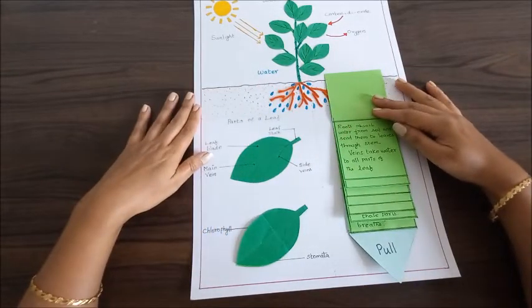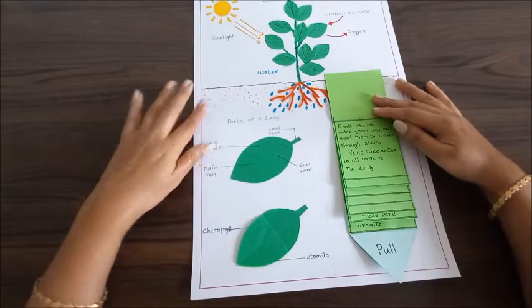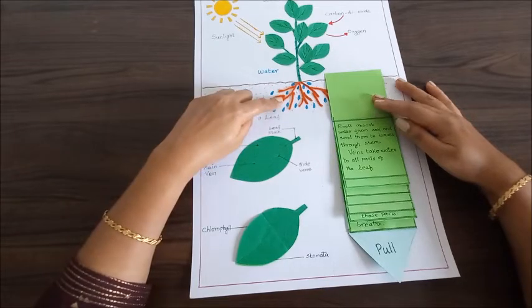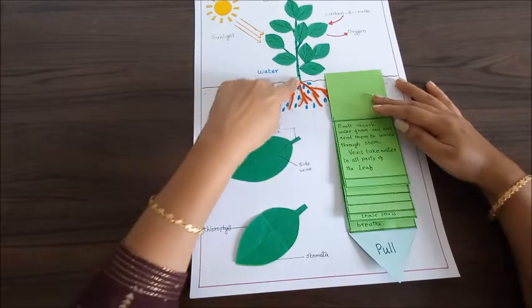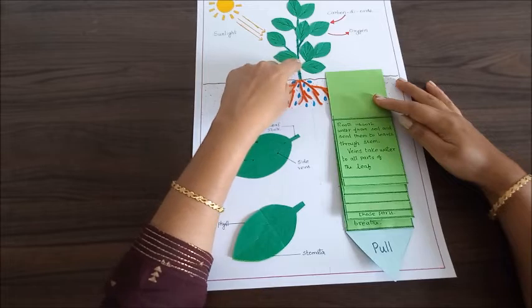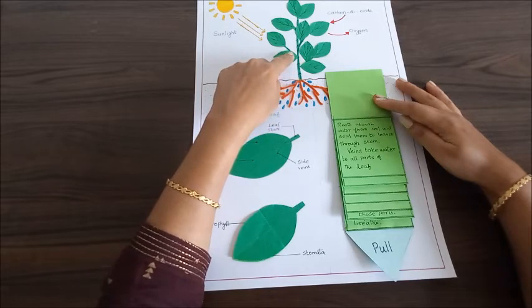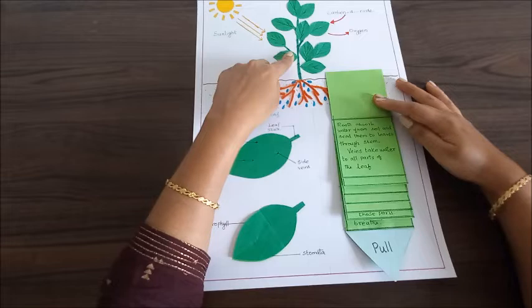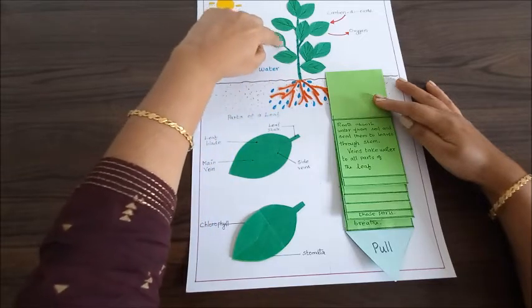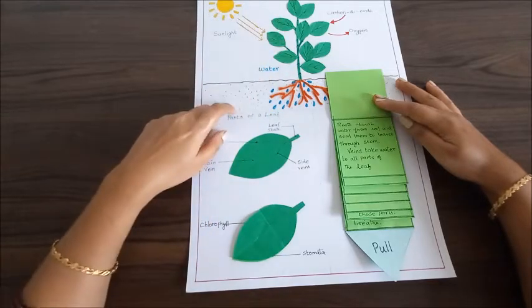Now how does it happen? Roots absorb water from the soil and send it to the leaves through the stem. Veins take water to all parts of the leaves. You can see here these thin lines are called veins of the leaves.